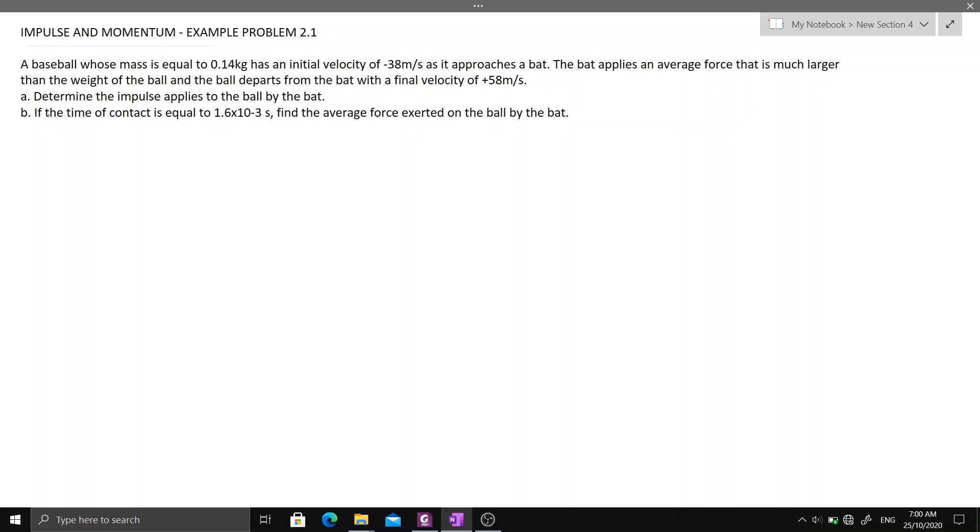We are asked to determine the impulse applied to the ball by the bat, and letter B: if the time of contact is equal to 1.6 times 10 raised to negative 3 seconds, find the average force exerted on the ball by the bat.